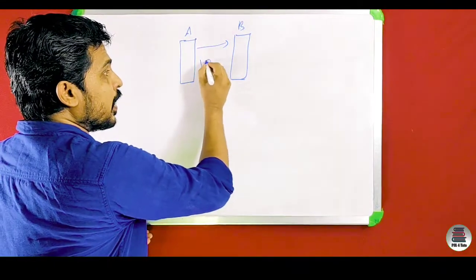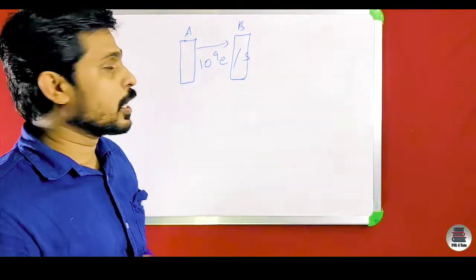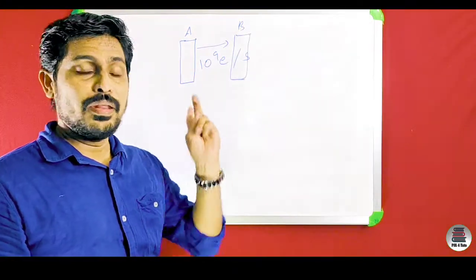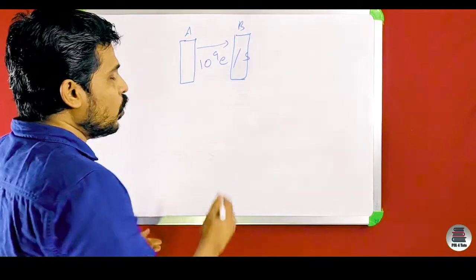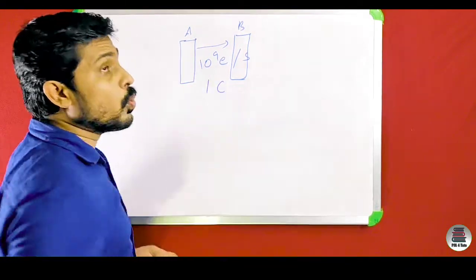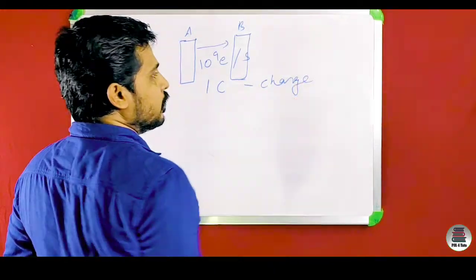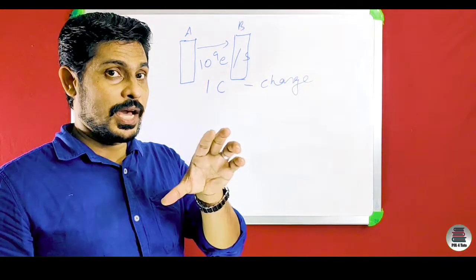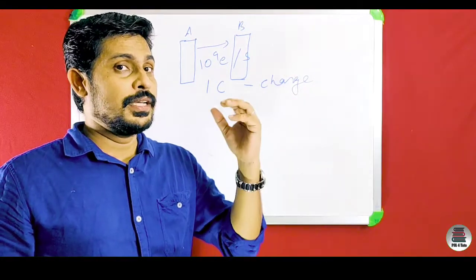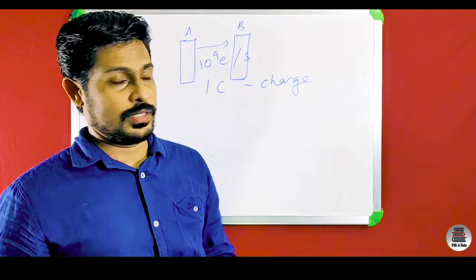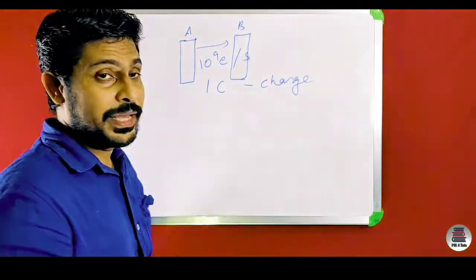10 raised to 9 electrons pass per second. One electron is charged 1.6 into 10 raised to minus 19 coulombs. One coulomb is the total charge. We will check out the same thing.